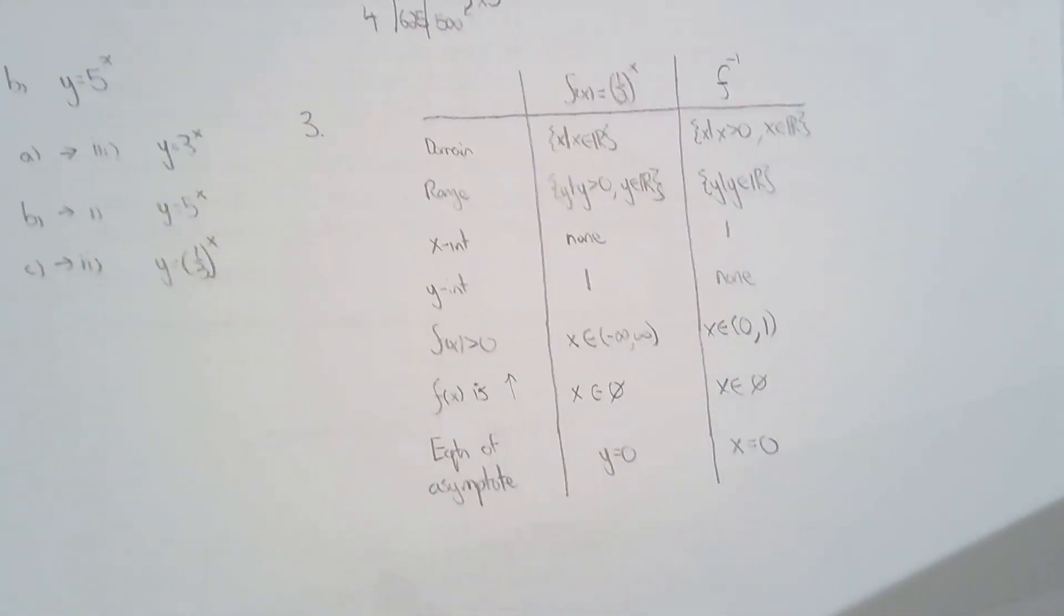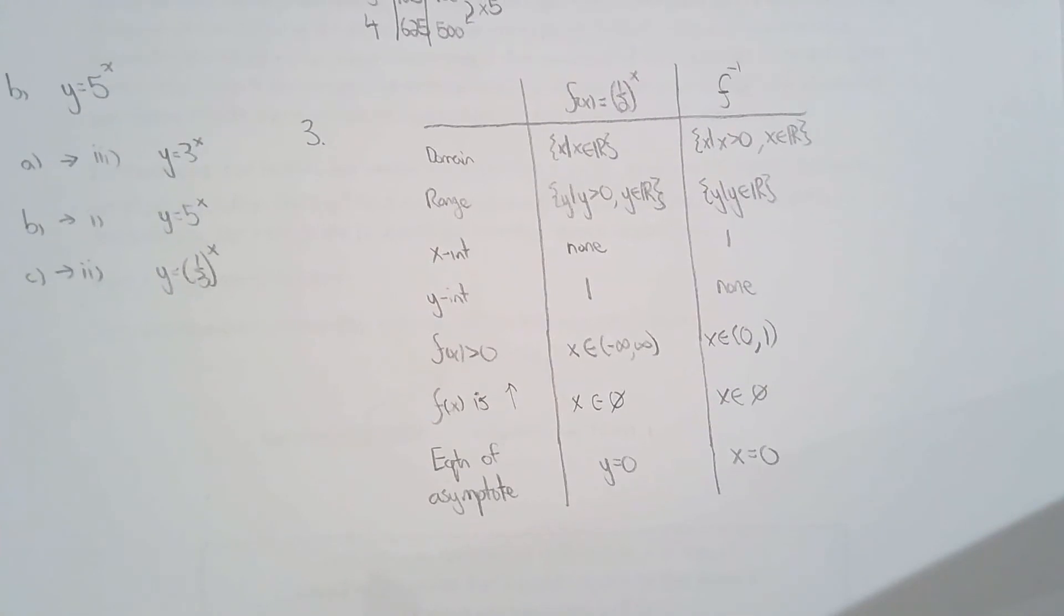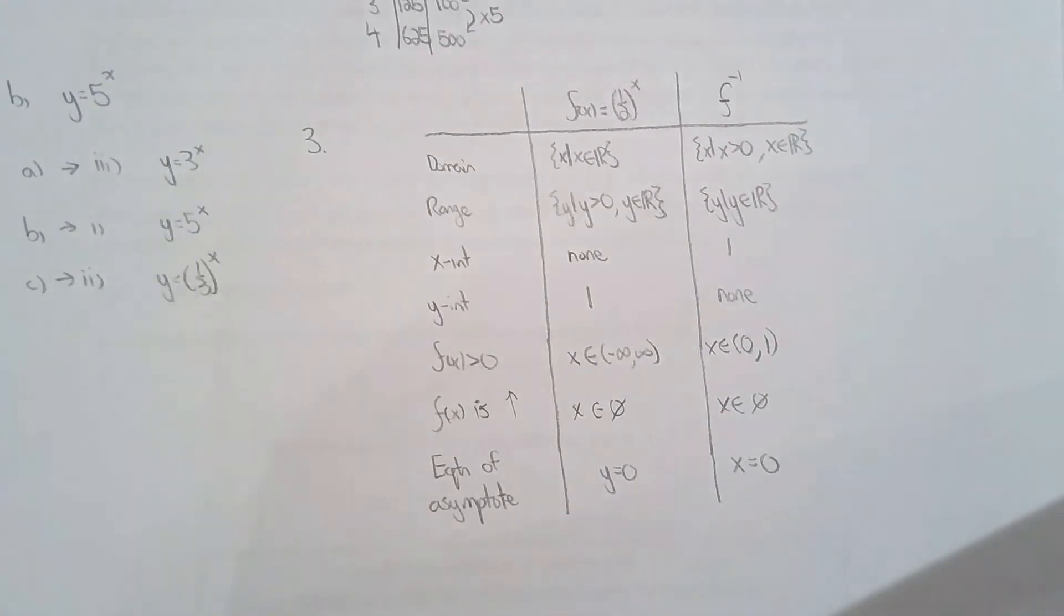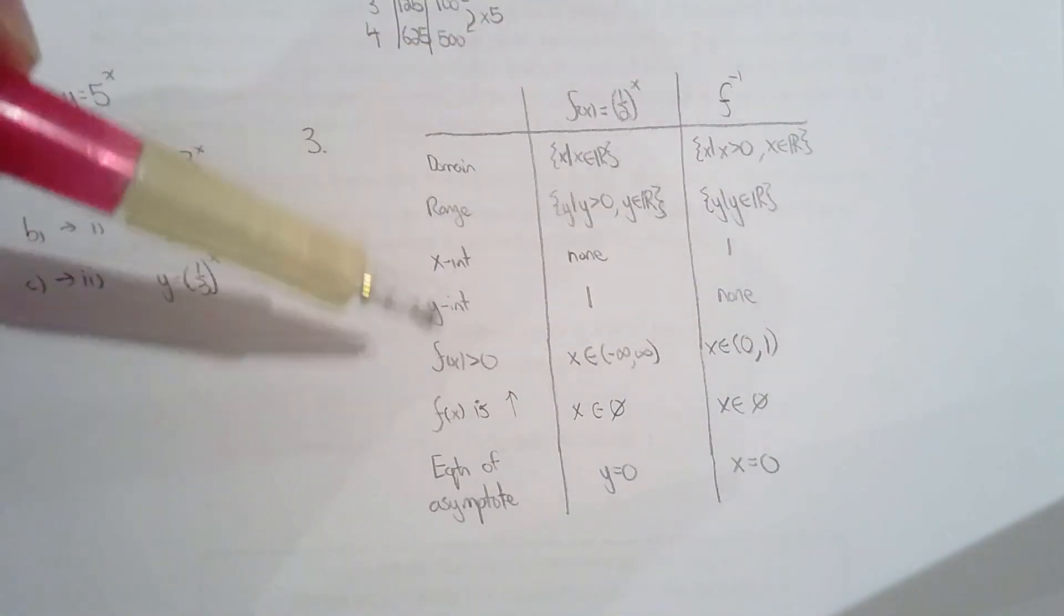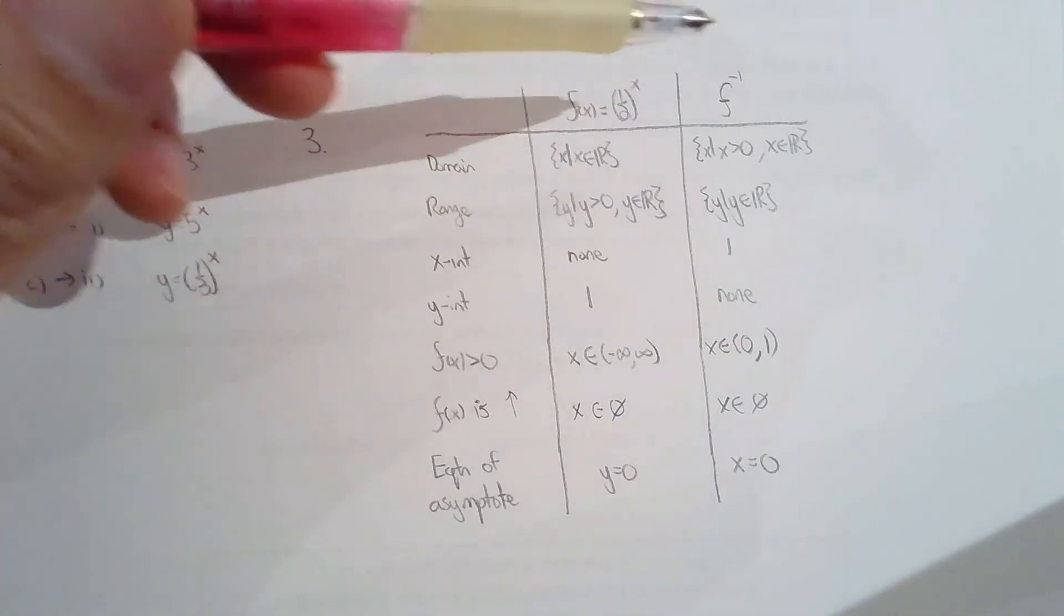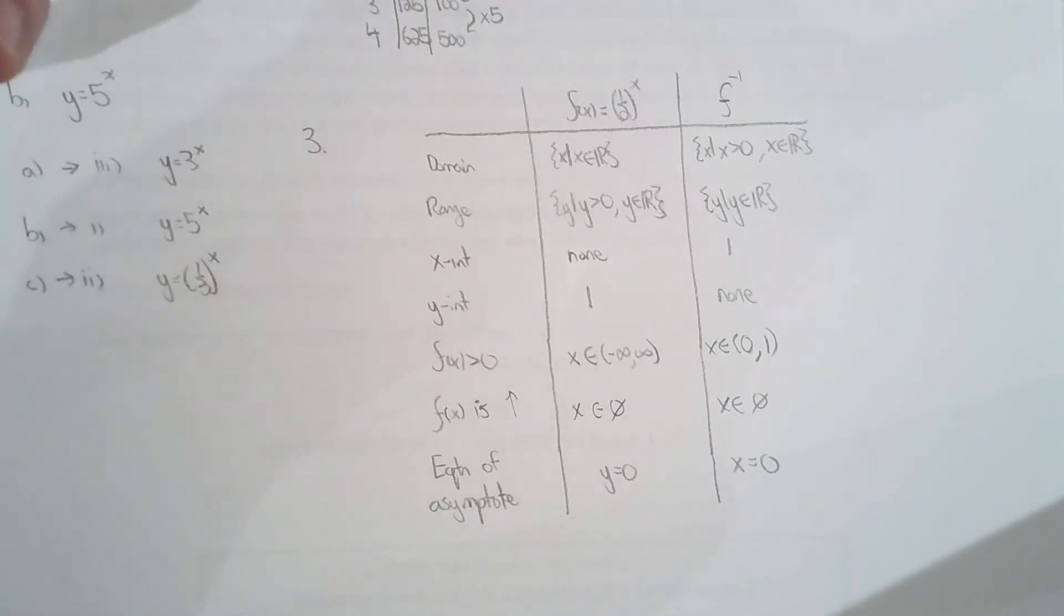For question 3, that's basically what we did in the handout. You need to know the key properties of exponential functions because that will help you identify the key properties of logarithmic functions. They're inverses of each other.